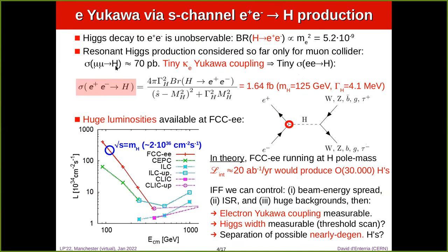The idea is that when we started to discuss the FCC seven or eight years ago, we realized the huge luminosities available at 125 GeV. We realized we could invert — instead of looking for Higgs to e+e-, try to produce the Higgs resonantly via e+e- to Higgs. If you plug this into the standard relativistic Breit-Wigner expression for the cross-section, you get a very small peak cross-section of 1.6 fb for the nominal mass and width of the standard model Higgs.